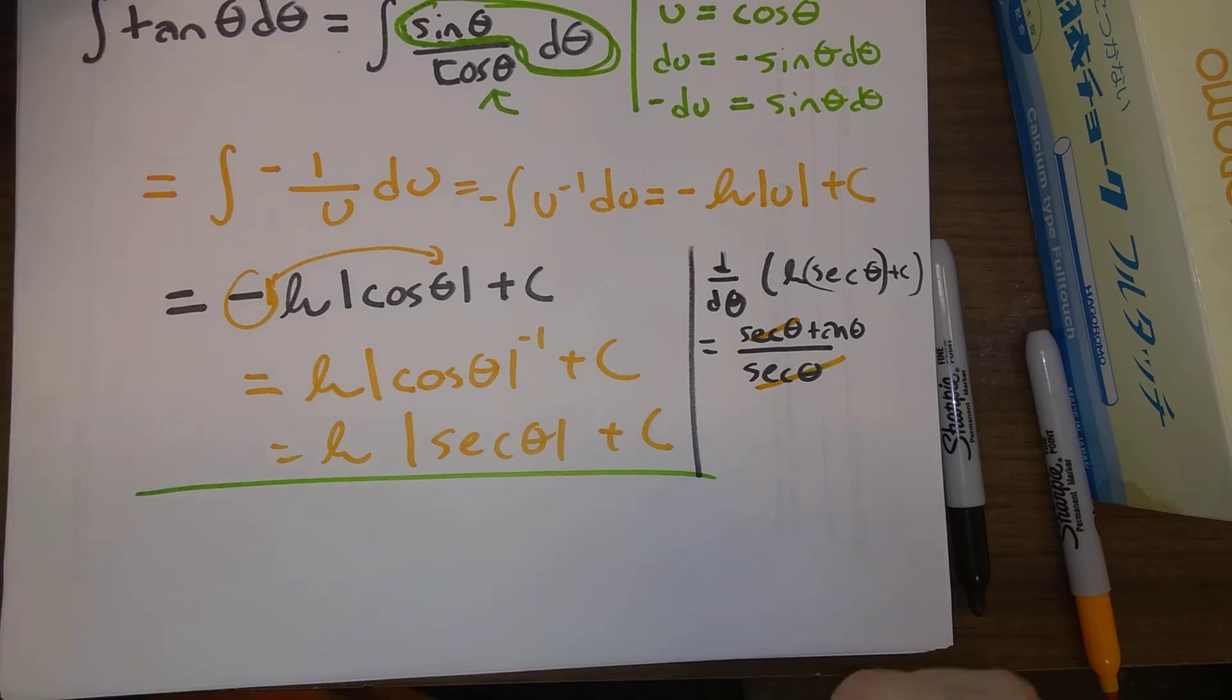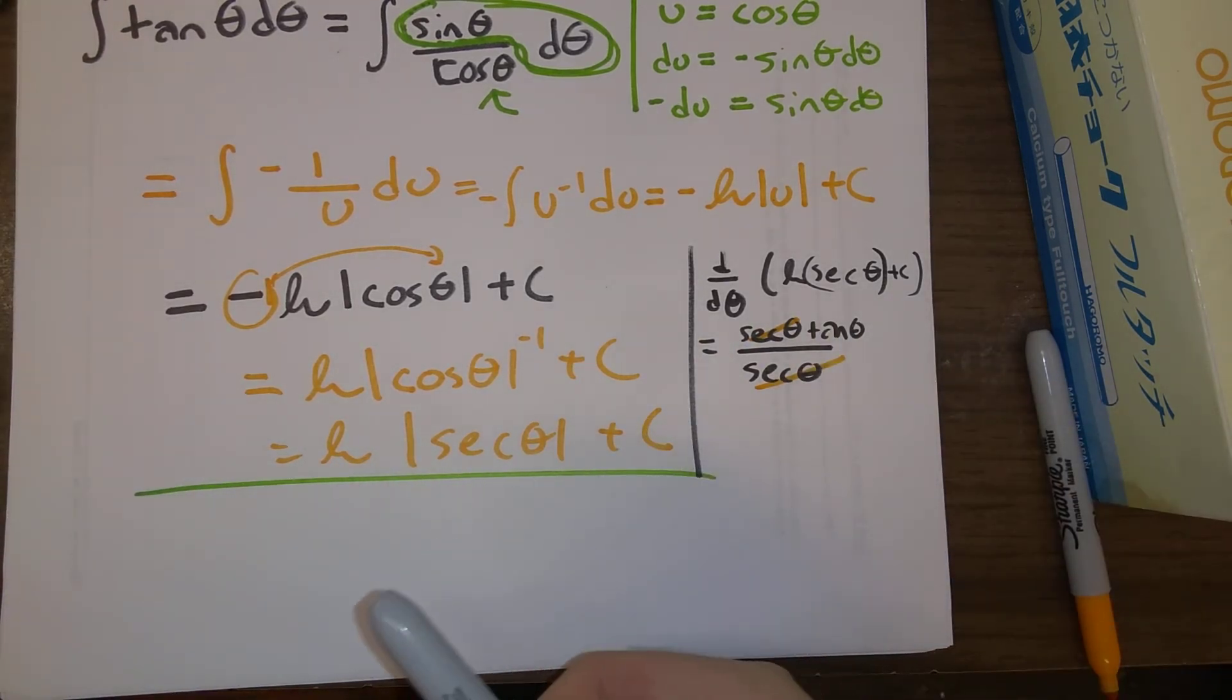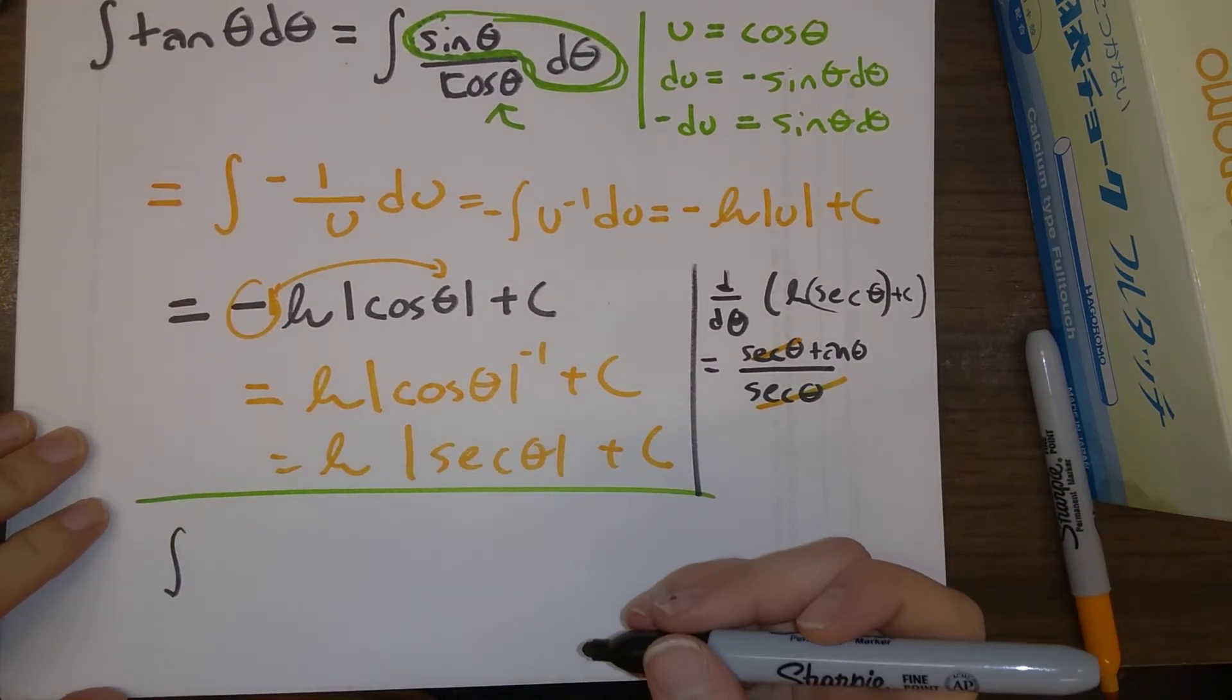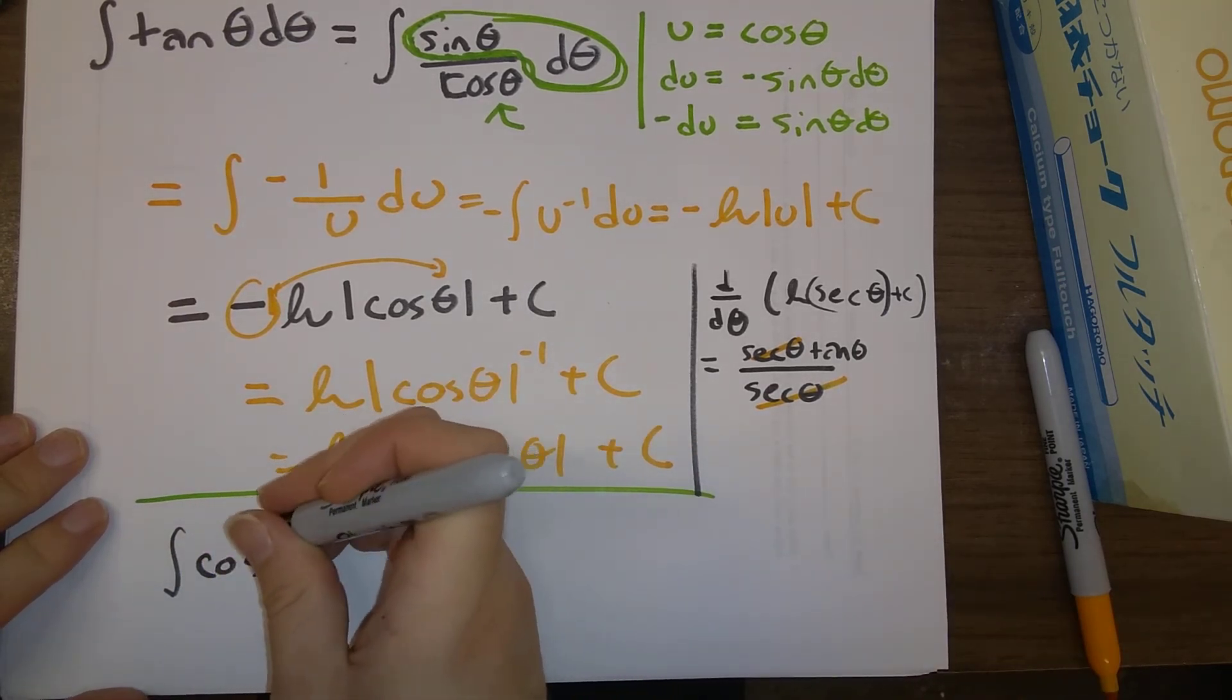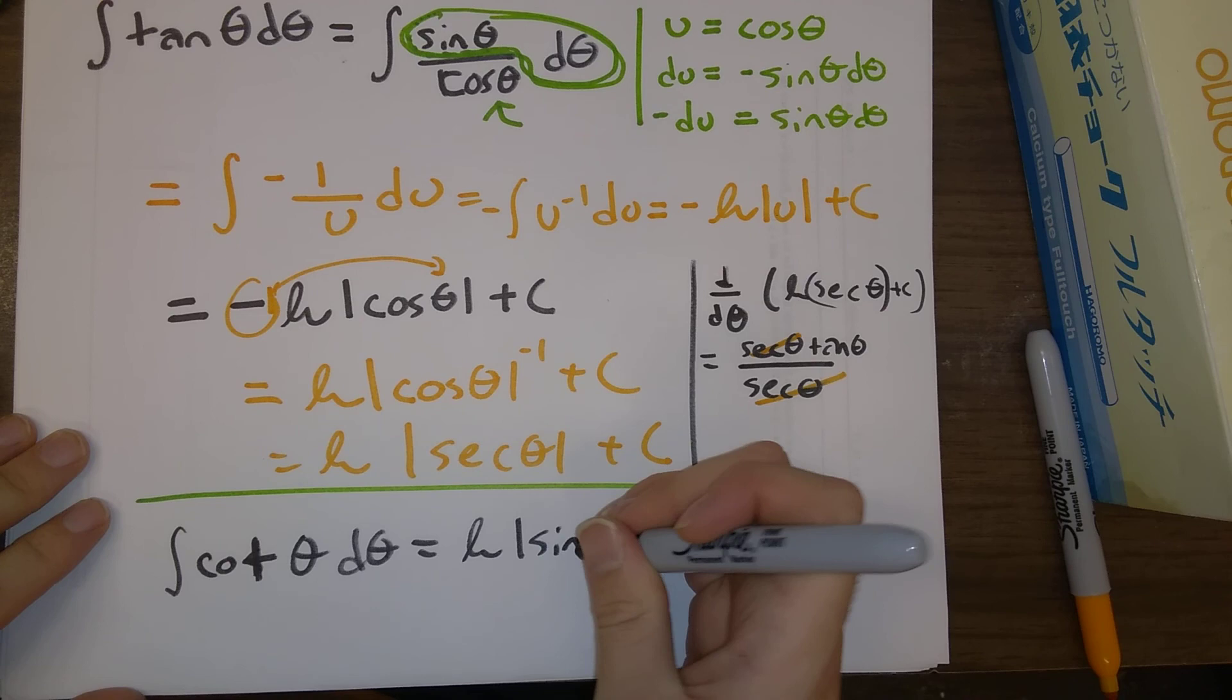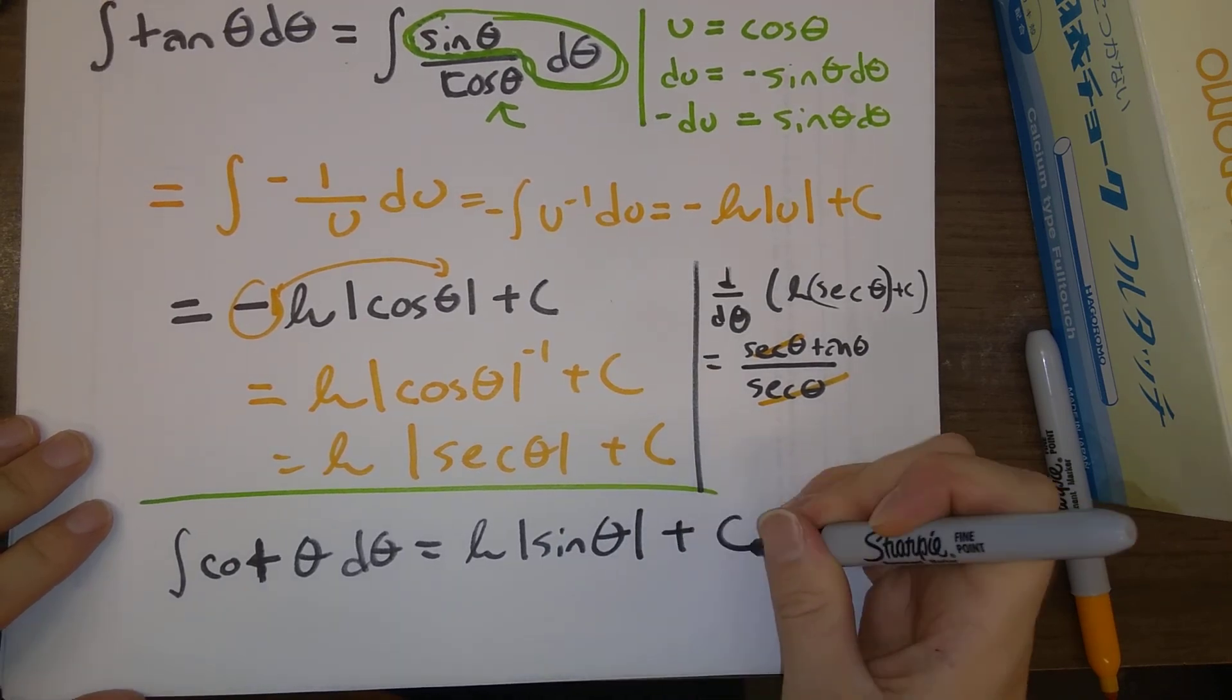So, that is a way to derive the formula for the integral of tangent theta. And I'll end this video just by noting that you can integrate cotangent, oops, not cosine, but cotangent theta. If you integrate cotangent theta, you end up with the natural log of the absolute value of sine theta, plus c.